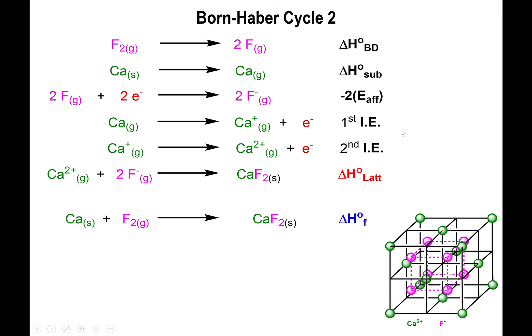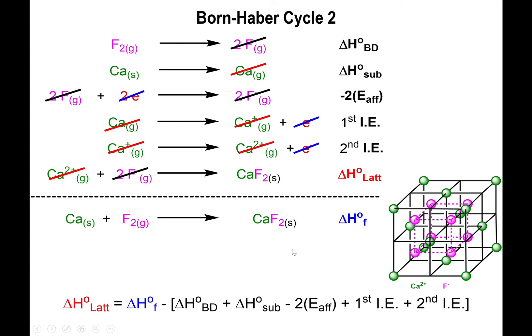All right, now at this point we basically have everything required to add up all these values and end up with the enthalpy of formation, except that what we want to find is the lattice enthalpy. So once again, add up all the values that are in black, add them up together, and subtract them from the enthalpy of formation. So you should end up with the following. And by the way, your calciums cancel out, your fluorides and fluorines cancel out, your electrons cancel out, so you end up with basically the enthalpy of formation equation.